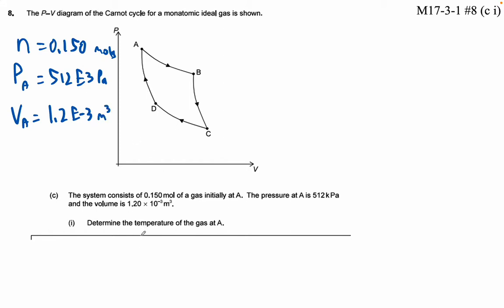So determine the temperature. I think they want us to use the ideal gas law here. So PV is NRT. So T is going to be PV over NR.